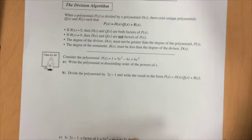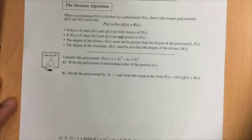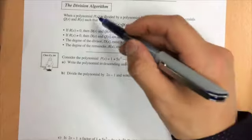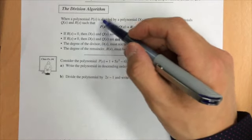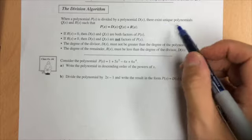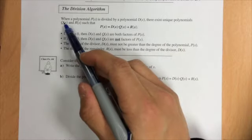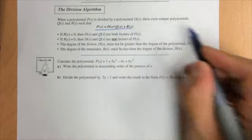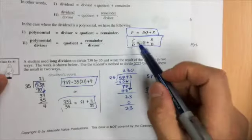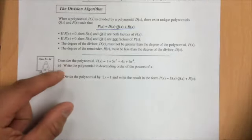Next we're going to look at the division algorithm. When a polynomial P(x) is divided by a polynomial D(x), there exist unique polynomials Q(x) and R(x) such that it gives us the standard form. This is really similar to what we looked at earlier, but written in function notation.